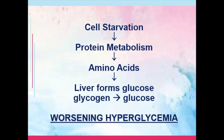Furthermore, there is cell starvation. Going back to that concept, there is enough glucose; however, the body perceives that it is being starved because the glucose cannot be properly metabolized. Remember, our body does not use glucose directly but rather the ATP that is derived from glucose. Because of the starvation of the cells, the body would opt for protein metabolism. Through amino acids, the liver would form glucose in the process referred to as gluconeogenesis. Then, there will be glycogenolysis — the breakdown of glycogen to glucose. Hence, your patient is forming glucose from amino acids and breaking down glycogen, which results in a worsening of hyperglycemia.